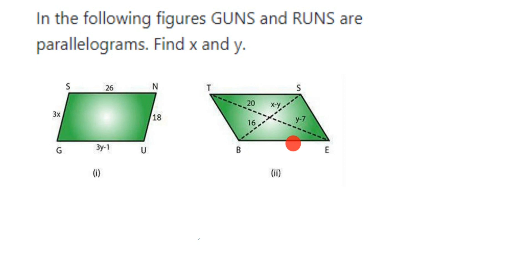In the first question you can see we have given the sides of a parallelogram. We have a property that opposite sides of a parallelogram are equal. We're going to use this property to find the answer. Opposite sides means we have SN opposite is GU, and SG is opposite to NU.